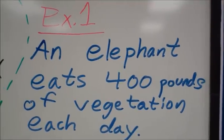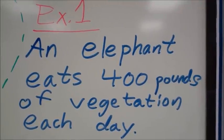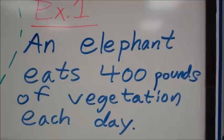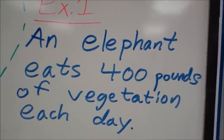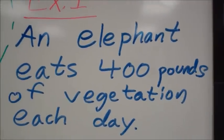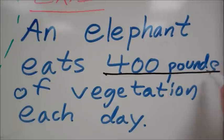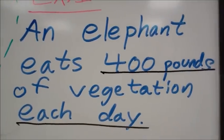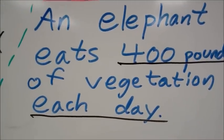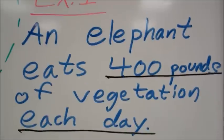Our first example here says an elephant eats 400 pounds of vegetation each day. What's important for us to know? We have 400 pounds of vegetation each day. So we want to write an equation from that.